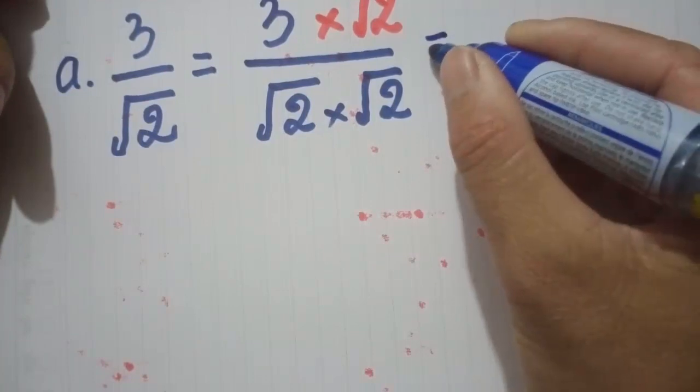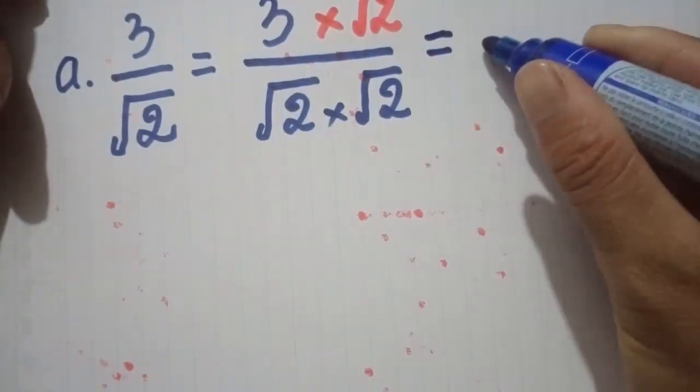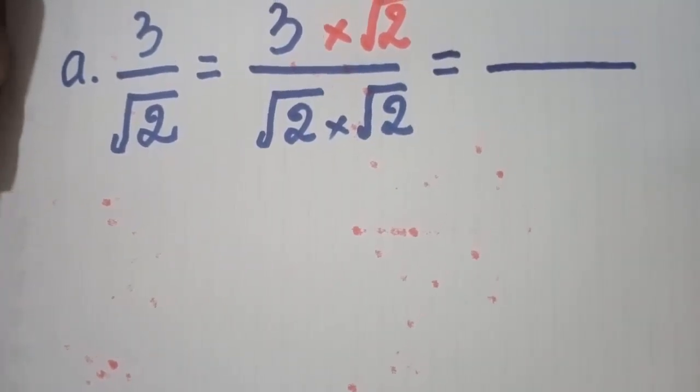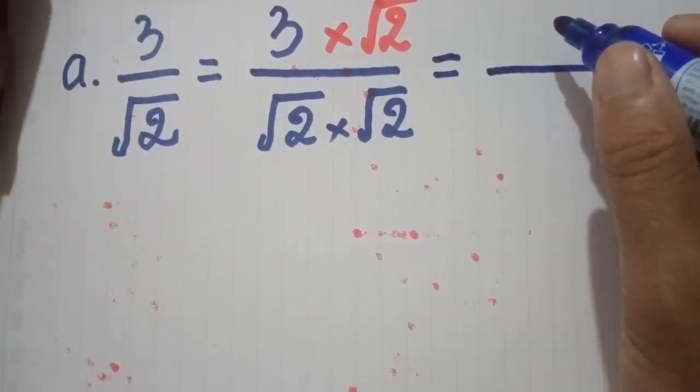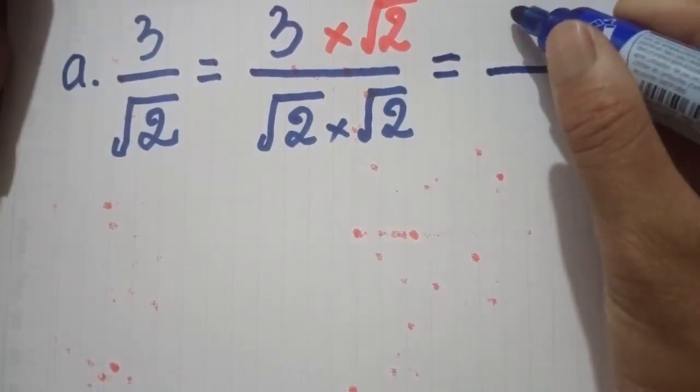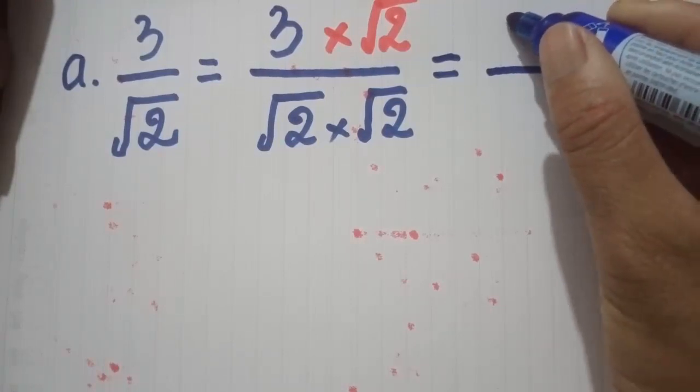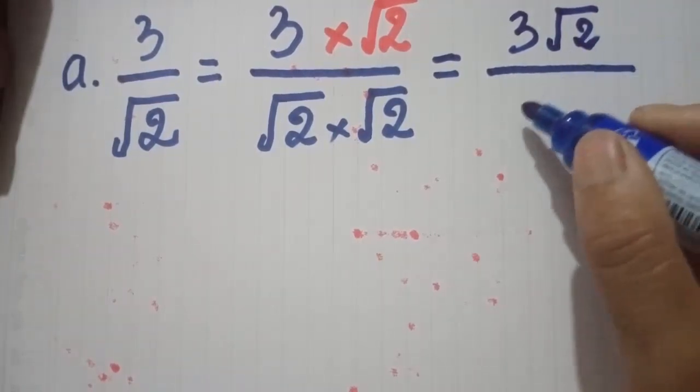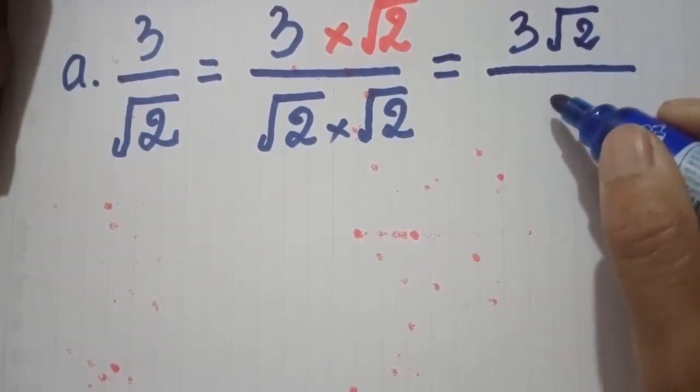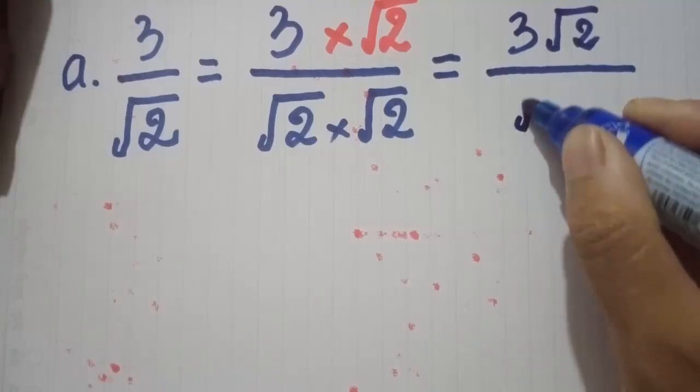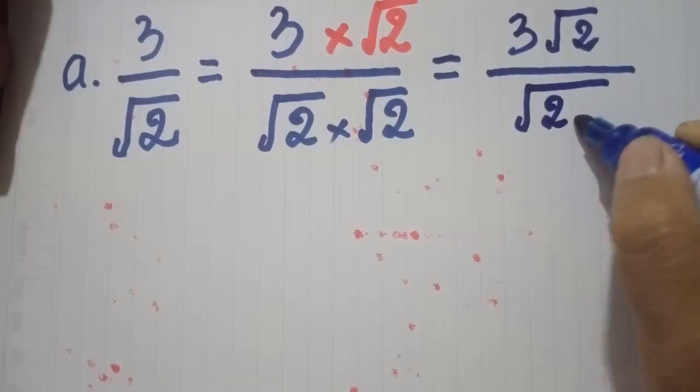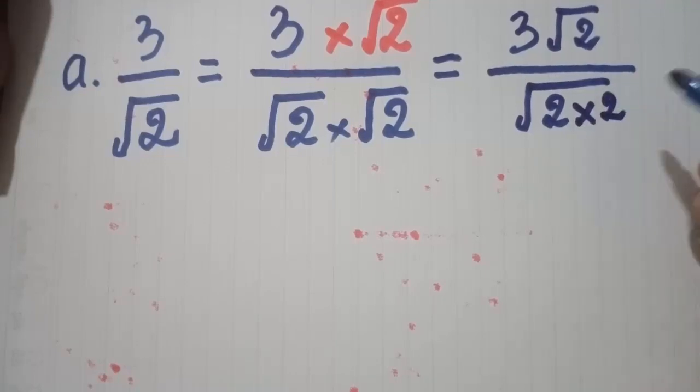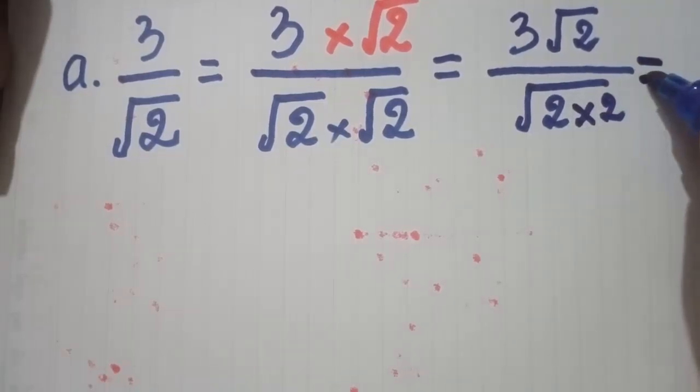So now we write equals, and above we write like this: 3 radical 2. And below we write the denominator as 2, radical 2 times radical 2. So now we write continue.